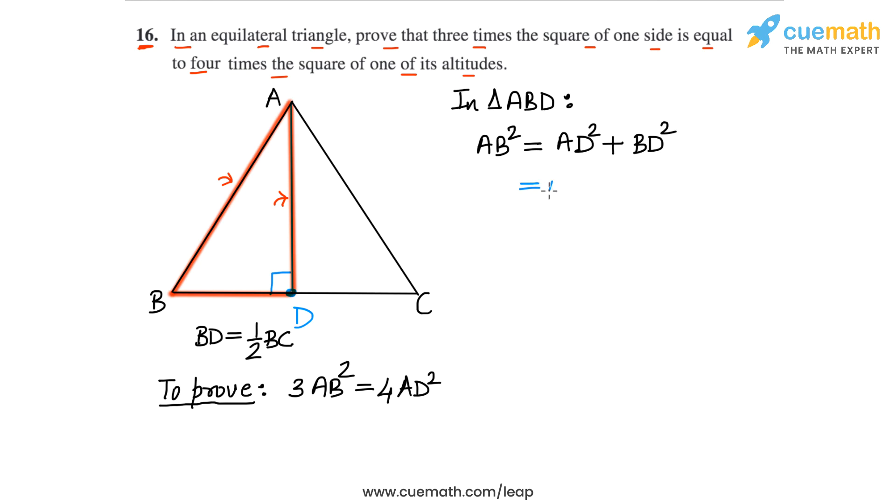Now on the right side, we write it as AD square, plus BD square instead of BD, let's write BD as half of BC, because we saw earlier that BD is half of BC. So we write this as half of BC whole square.